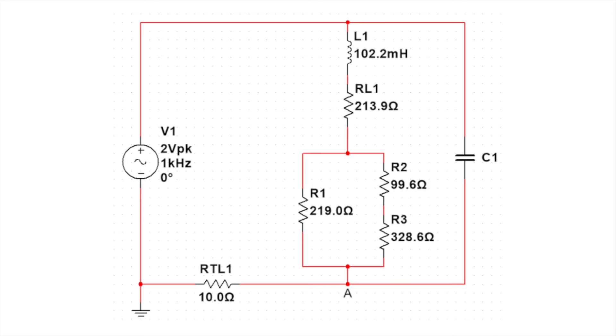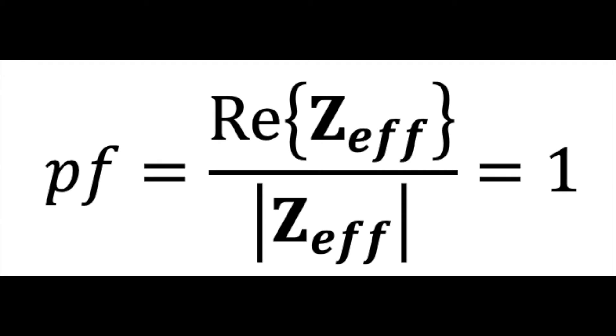As mentioned, we can fix this power factor by placing a capacitor in parallel with our load network, much like what we've got here. However, at this point we don't actually know the value of the capacitance that will actually correct this power factor, but we can find this by setting our power factor equation equal to 1.